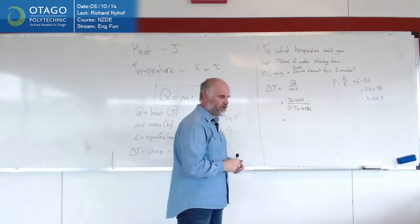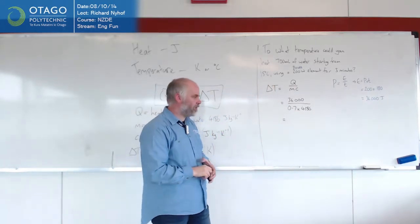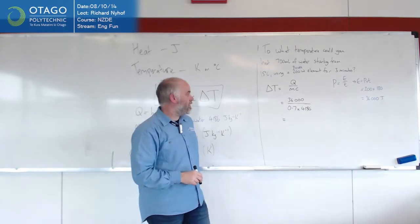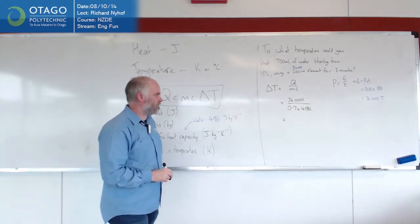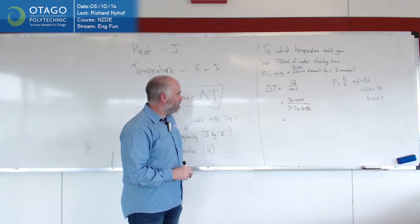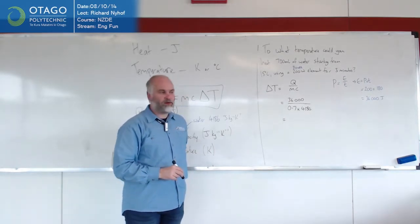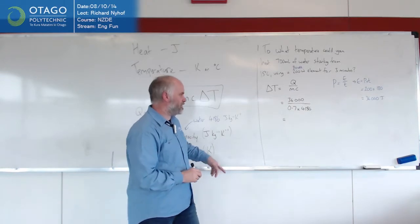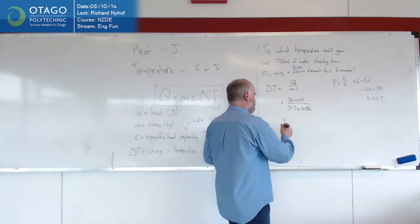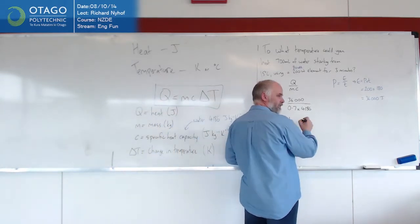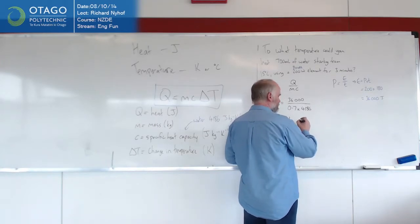So we push the buttons on the calculator, which I didn't bring with me, and we should be able to work out how much the change in temperature is. Someone's going to be able to do that for me pretty quickly, hopefully. You got an answer, Liam, for this? 12. This is about 12 degrees? Yeah. About 12? Give us one decimal place. 12.3? Yeah.